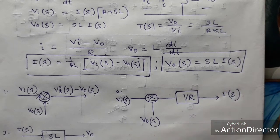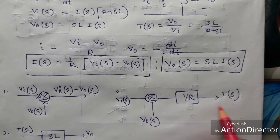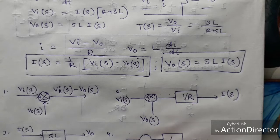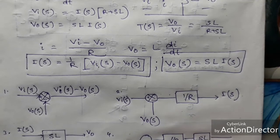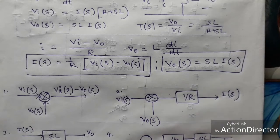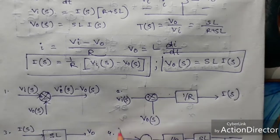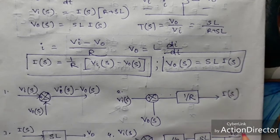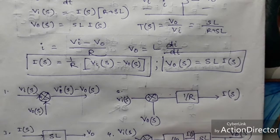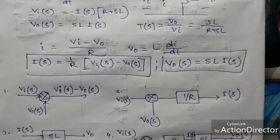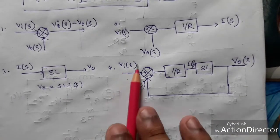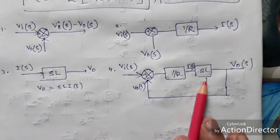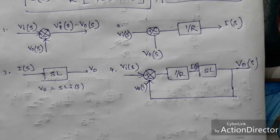Now combining the two equations: I(s) is the same current, so I connect the output I(s) into the sL block and feed V_0(s) back to the summing block. The final block diagram is: V_i(s) goes into a summing block (plus), V_0(s) feeds back (minus), output goes through 1/R giving I(s), then through sL giving V_0(s), which feeds back. This satisfies both equations.